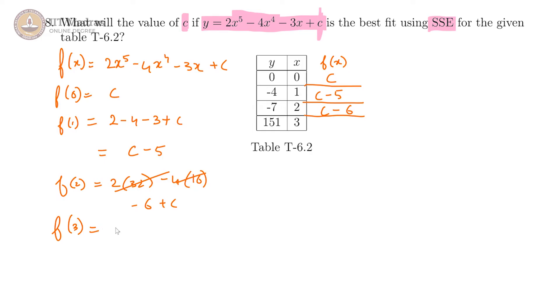f of 3 which is 2 into 243 minus 4 into 81 minus 3 into 3 plus c, that gives us c plus 153. So here it will be c plus 153.